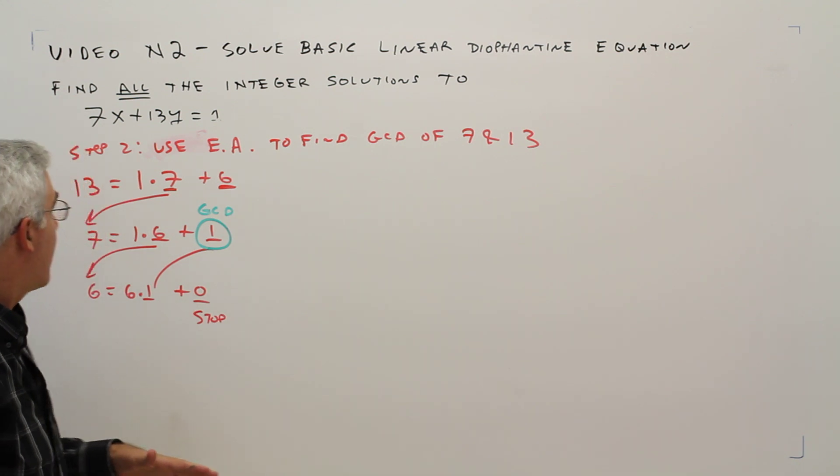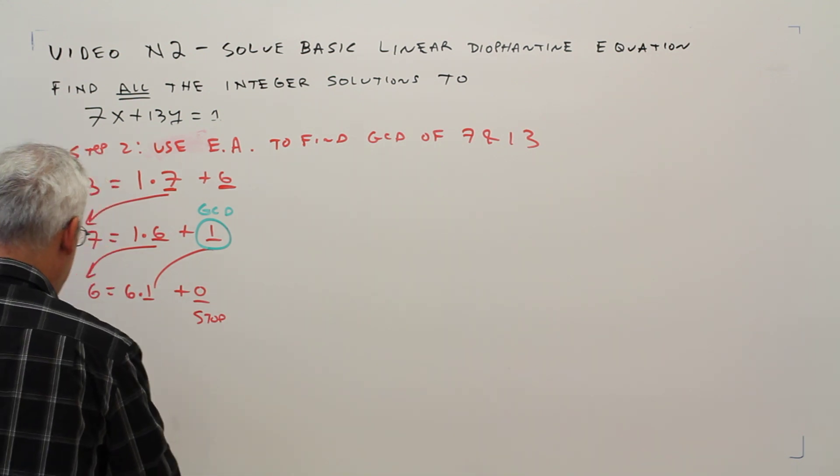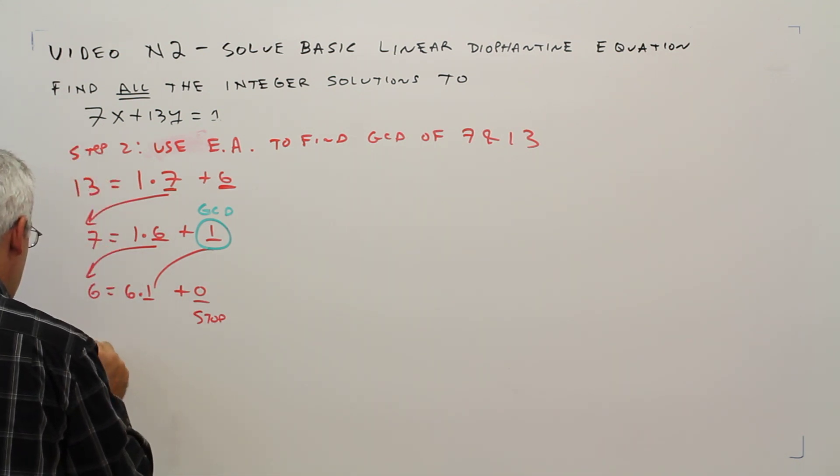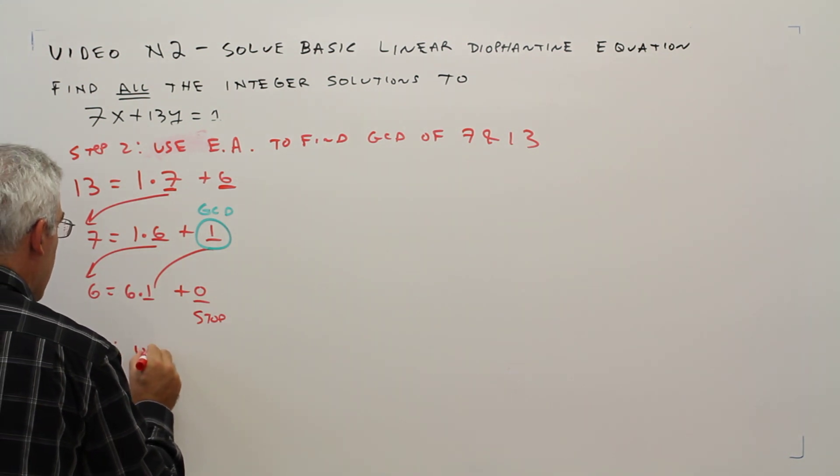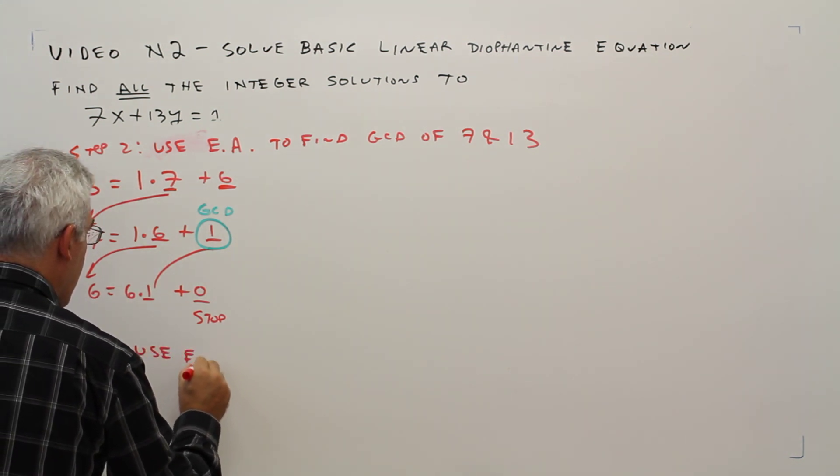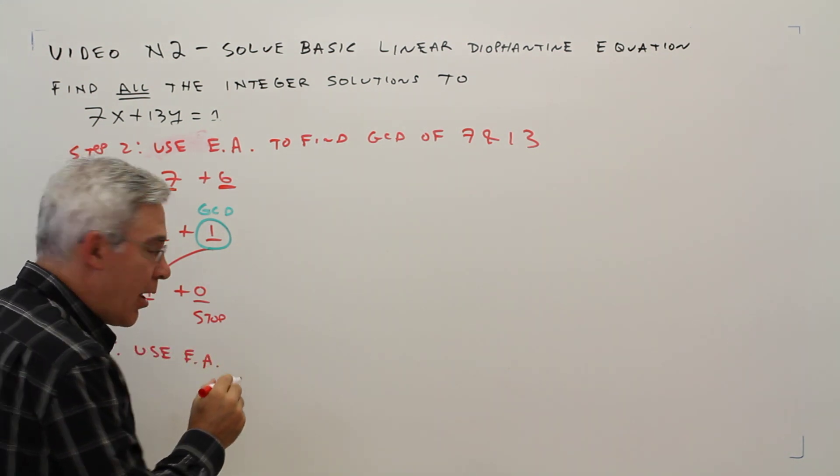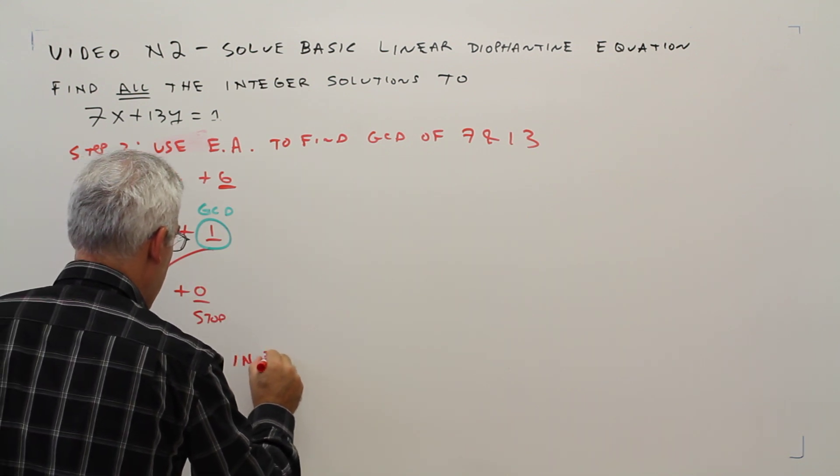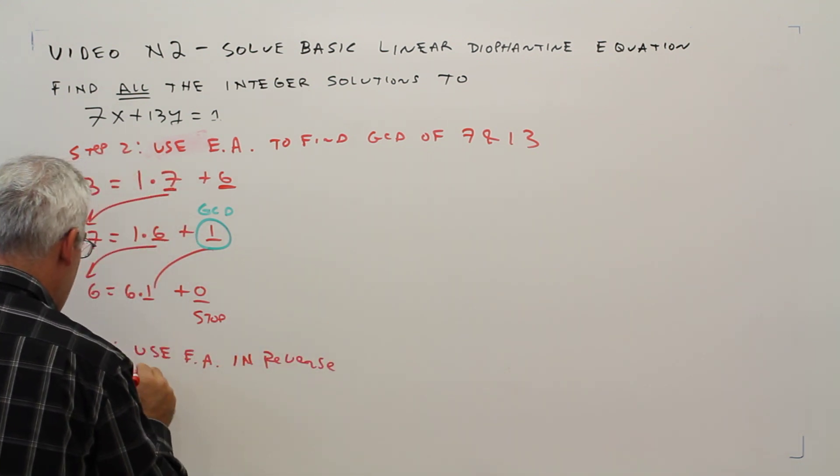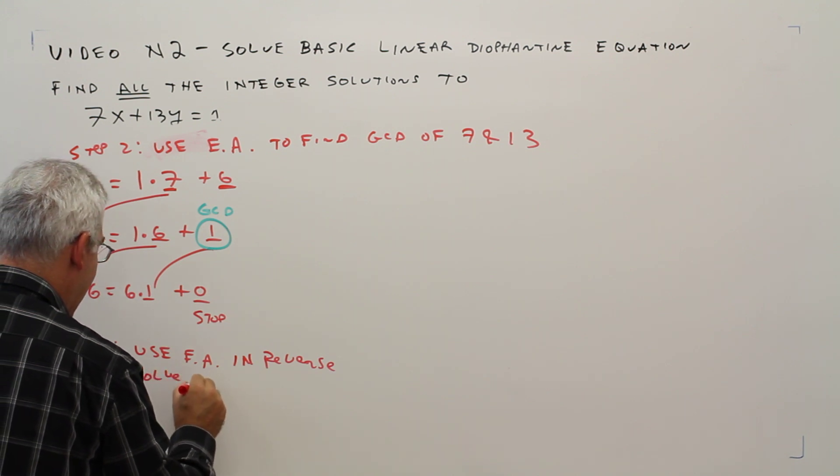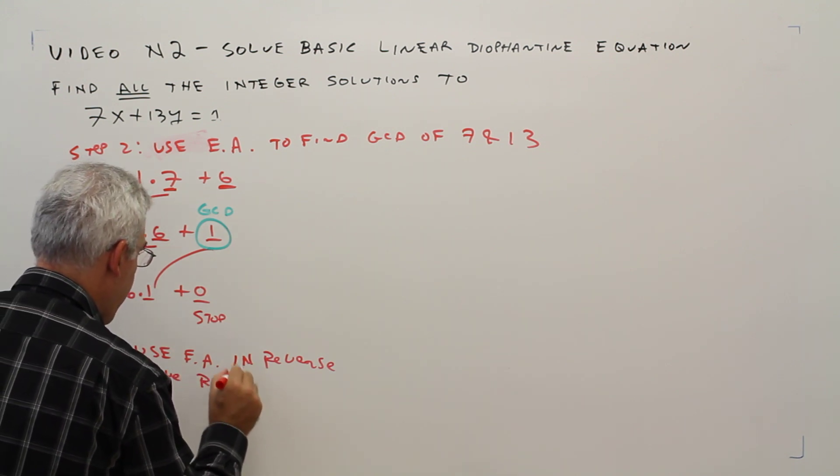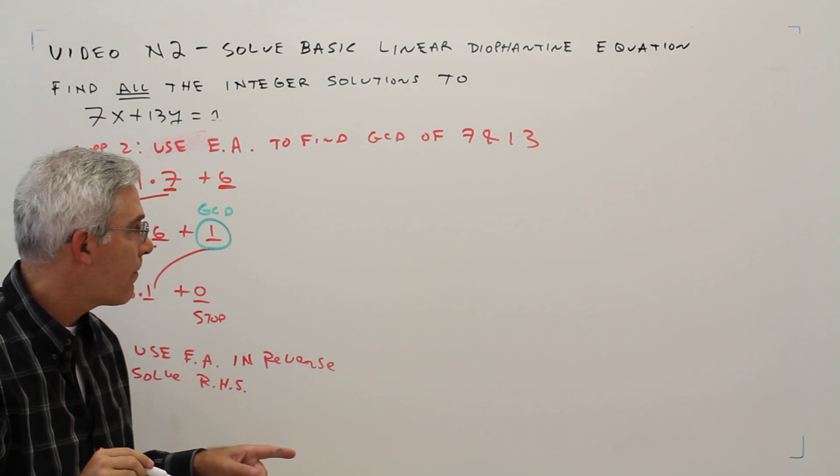Okay. Step 3. I'll write it below here. Step 3: use Euclidean algorithm in reverse, and we're basically going to be solving for the right-hand side.